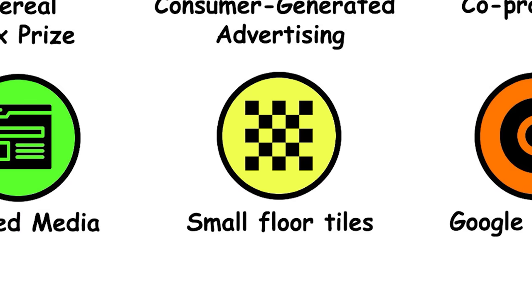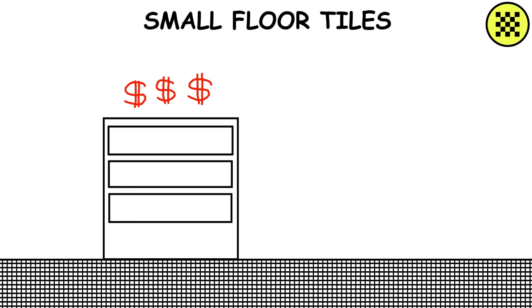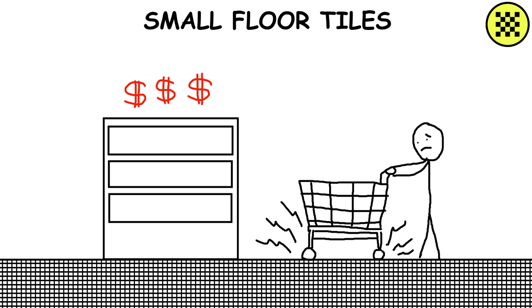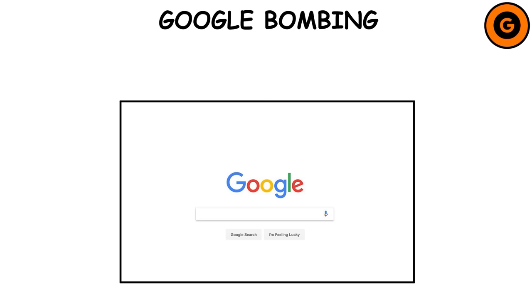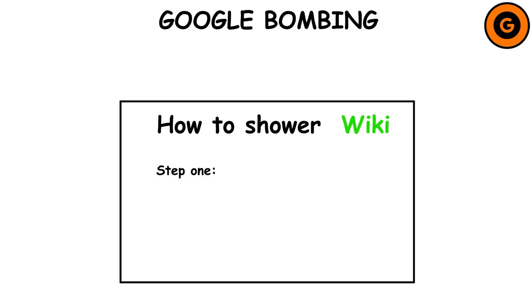Small Floor Tiles: In supermarkets, laying smaller floor tiles along the aisles that have more expensive stock, so the sound of your trolley wheels speeding up will encourage you to slow down and spend longer looking at the shelf items. Google Bombing: The practice of causing a website to rank highly in web search engine results for irrelevant, unrelated, or off-topic search terms — done for either business, political, or comedic purposes.